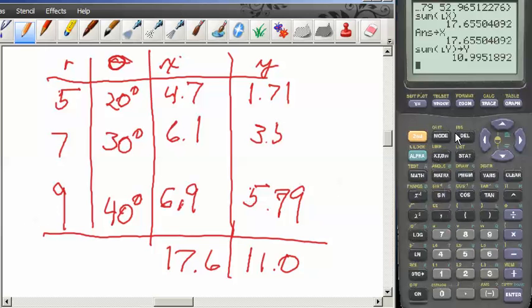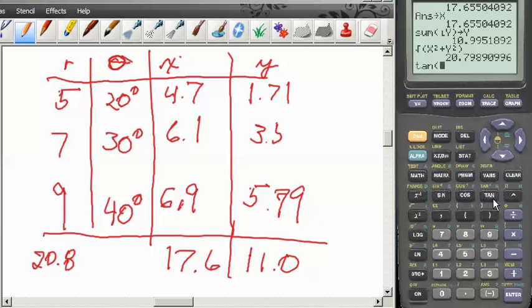Now I can find r is going to be square root of alpha x squared plus alpha y squared and that's twenty point eight. And our theta is going to be inverse tangent of alpha y divided by alpha x. That came out to be thirty one point nine degrees.